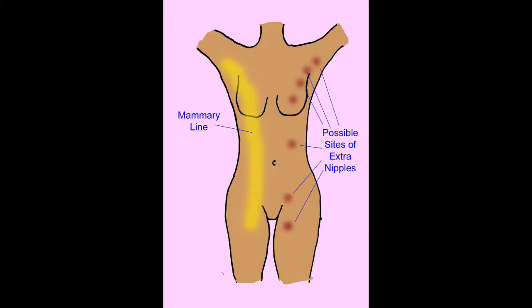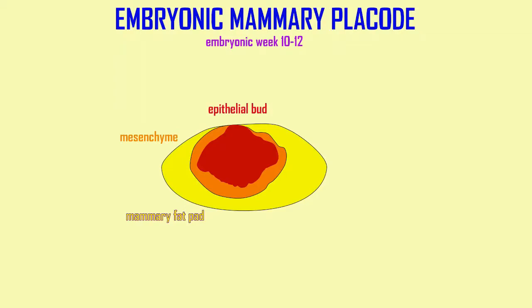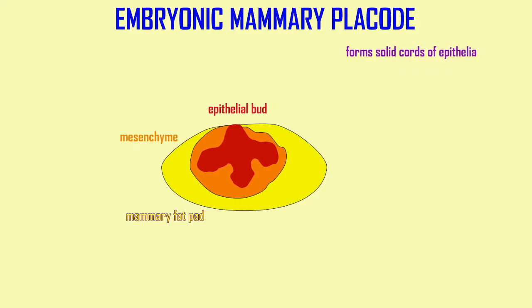In humans, occasionally additional breast tissue and additional nipples may form from additional sites along this mammary ridge. By embryonic week 10 to 12, an epithelial bud has branched into the connective tissue mesenchyme, which itself is then branching into a mammary fat pad.